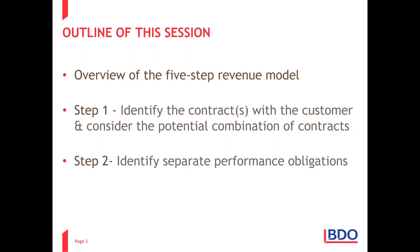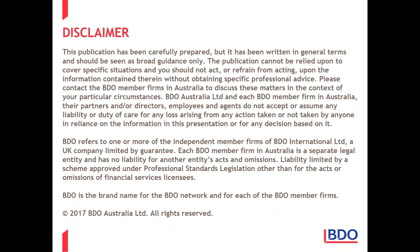The outline of this session: we'll do a very high-level recap of the overview of the five-step revenue model, then this month we're going to particularly focus on steps 1 and 2, and then in next month's webinar in August we'll be looking at steps 3 and 4. Step 1 is to identify the contracts with the customer and consider the potential combination of contracts, and step 2 is to identify the separate performance obligations. Just a reminder that this is a training event for raising awareness and not formal technical advice.